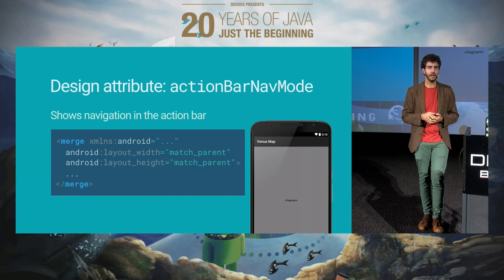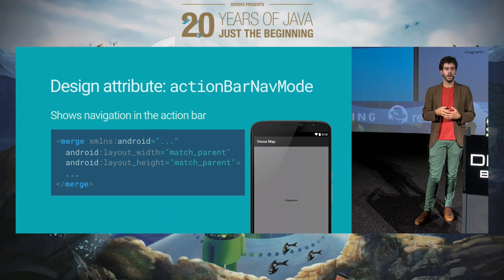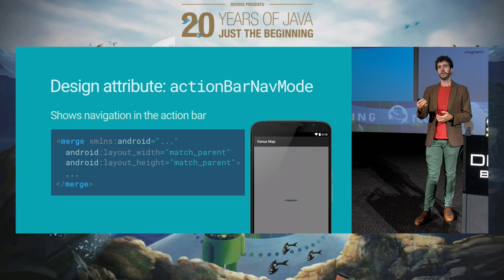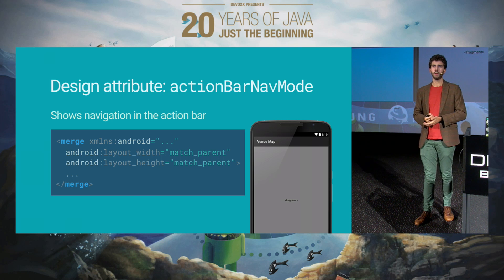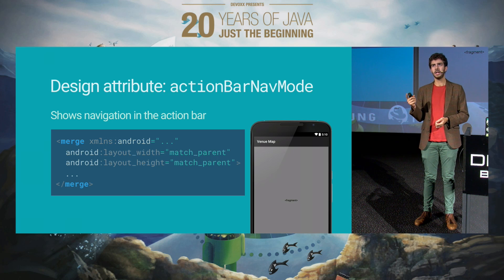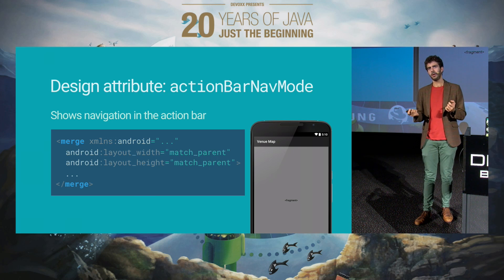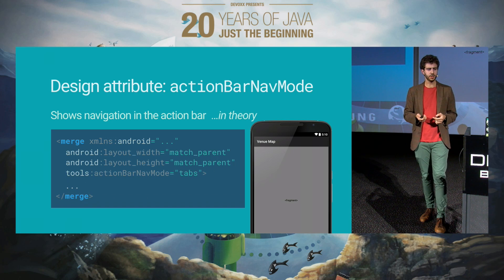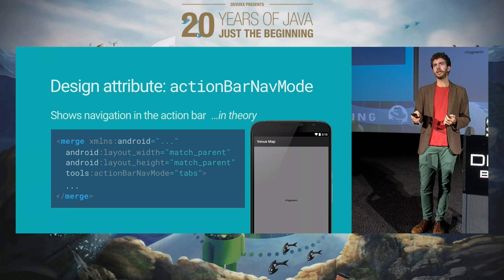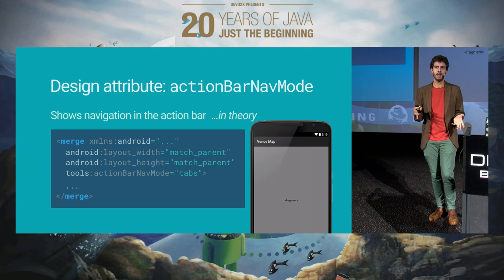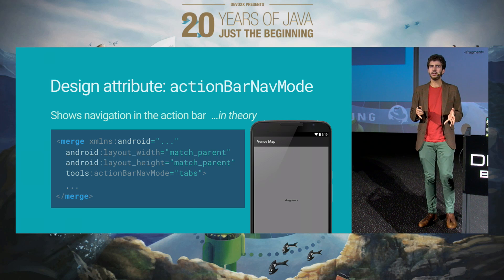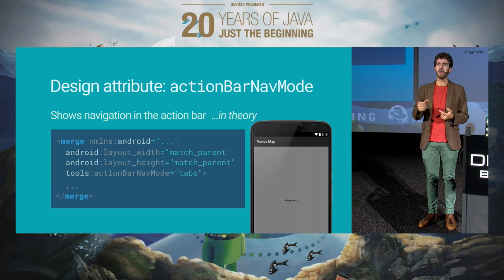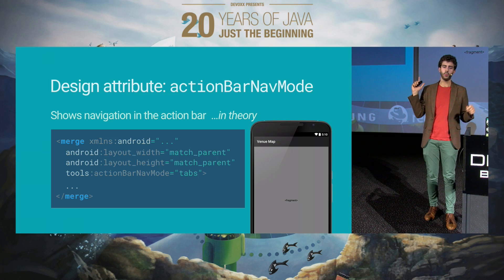Next up is the actionBarNavMode attribute. As the name says, it's supposed to preview the navigation mode you're using for your action bar. However, action bar should tell you holo, because in material design the action bar is called the app bar. It only works on themes based on holo — it doesn't work on newer versions, and it doesn't do much if you're using AppCompat or material themes as a base.